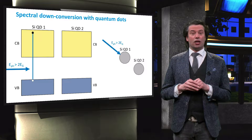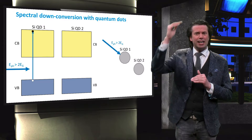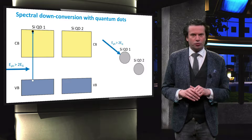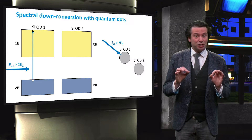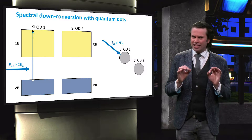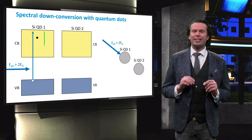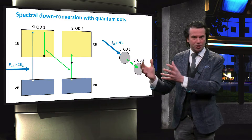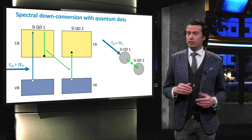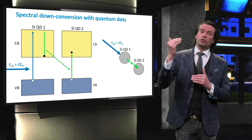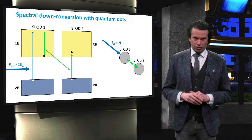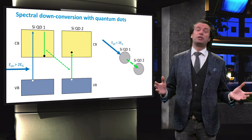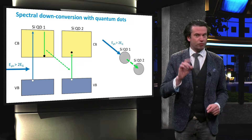resulting in an electron being excited high into the conduction band. In contrast to a bulk semiconductor, the excess energy of the photon is not necessarily lost as heat, but can be transferred as a quantized energy package to a neighboring quantum dot. Here, a second electron is excited into the conduction band of the second dot. As a result, two electron-hole pairs have been created out of one photon.